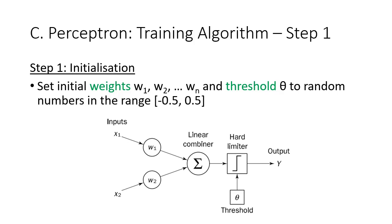This is the continuation of the ANN topic, particularly on the perceptron training algorithm. In previous videos, we have talked about the need to train a perceptron by changing the value of its weights. This video will look at the steps of the training algorithm and discuss an example of training using training data.